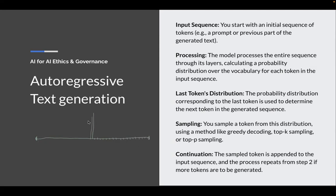It will produce a probability for each of these words, where some have higher probabilities than others. This is produced for every single token in the sequence. So for example, if I put in 'I love,' the distribution might have the highest probability for 'cats' — 'I love cats' — and the next highest might be 'chocolate' — 'I love chocolate,' for instance. This distribution is produced for every single token you put in.